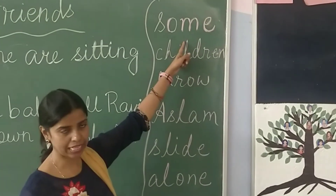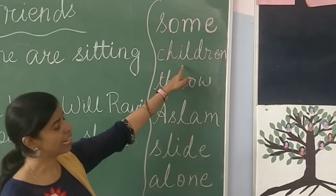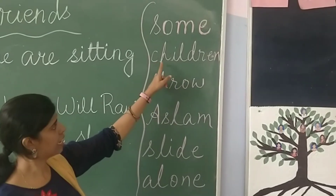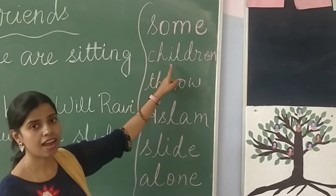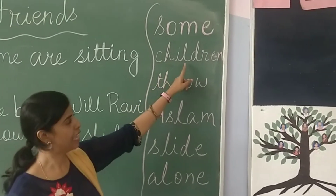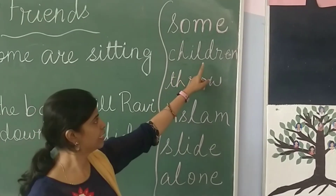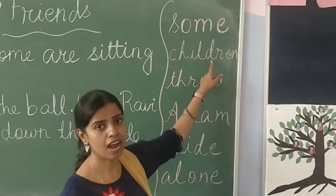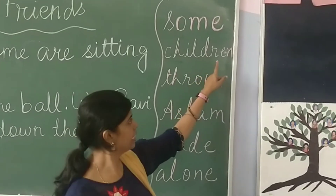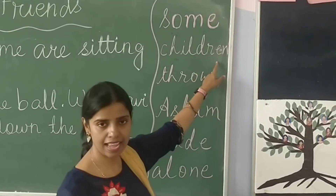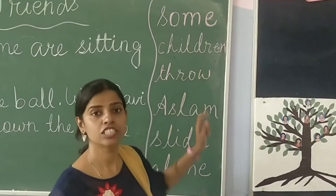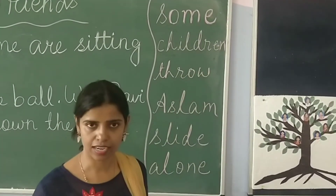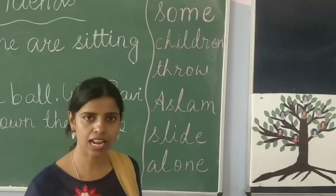Now the next word is C-H-I-L-D-R-E-N. Children. The correct pronunciation is 'children'.